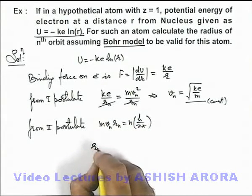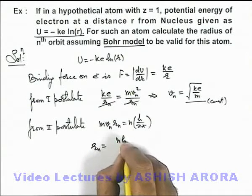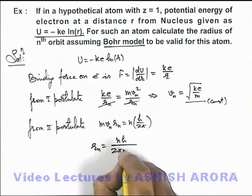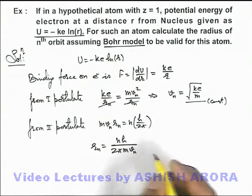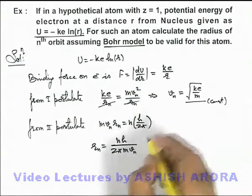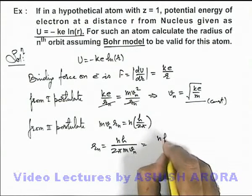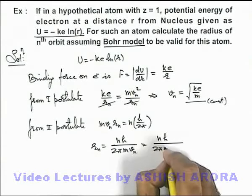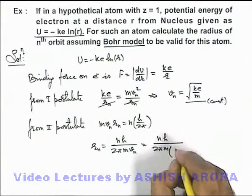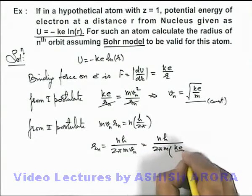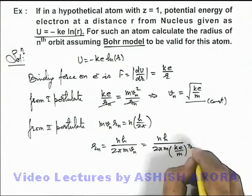The radius of the nth orbit is nh/(2πmvₙ). Substituting the value of vₙ, we get nh/(2πm) times 1/√(ke/m), which simplifies to nh/(2π√(kem)).